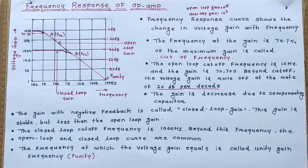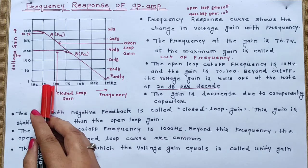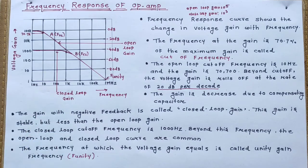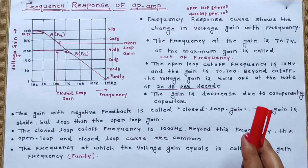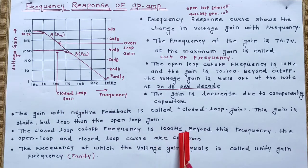The frequency at which the gain is 70.7% of the maximum gain is the cutoff frequency. For the open loop, the cutoff frequency is 10 Hz, and for the closed loop, the cutoff frequency is 1 kHz, or 1000 Hz.